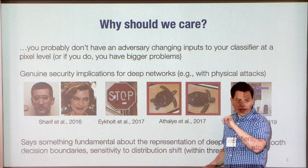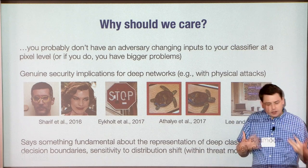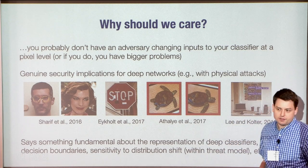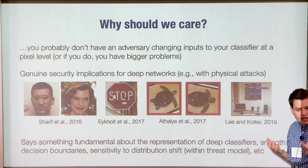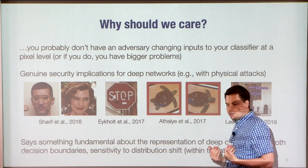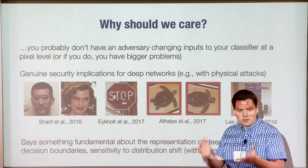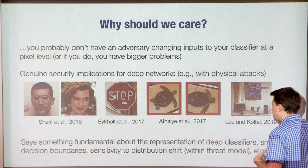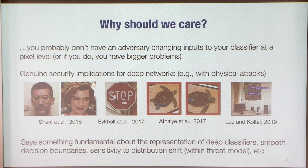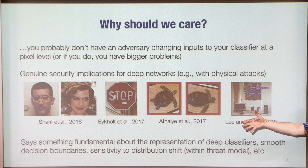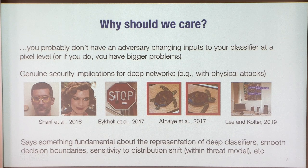In addition, this says something very fundamental about the nature of our classifiers. The fact that these adversarial examples exist tells us something fundamental about what these classifiers are learning — that they seem to be learning things very different from the representations we use to classify objects, about the smoothness of decision boundaries, and about sensitivity to distribution shift. In some sense, the adversarial setting captures the worst-case distribution shift within the allowable threat model.